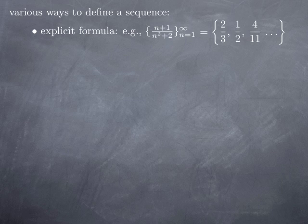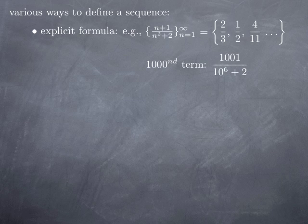When the sequence is given by an explicit formula, it's easy to calculate any term. For instance, I could ask: what is the 1,000th term? I'll plug n = 1,000 into the explicit formula. I get 1,001 at the top and 1,000 squared — which is a million — plus 2 at the bottom. So I have 1,001 over 1,000,002, and that's the value of term number 1,000 in my sequence.